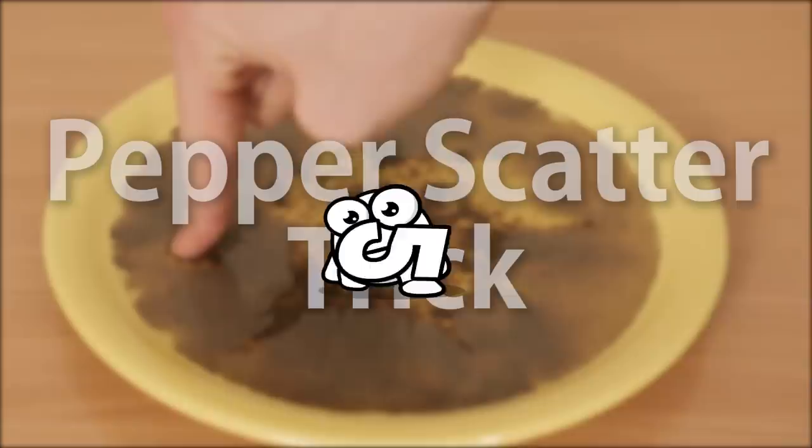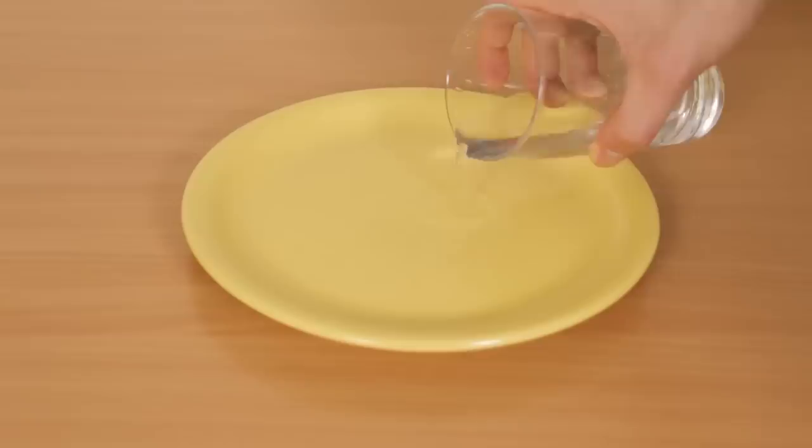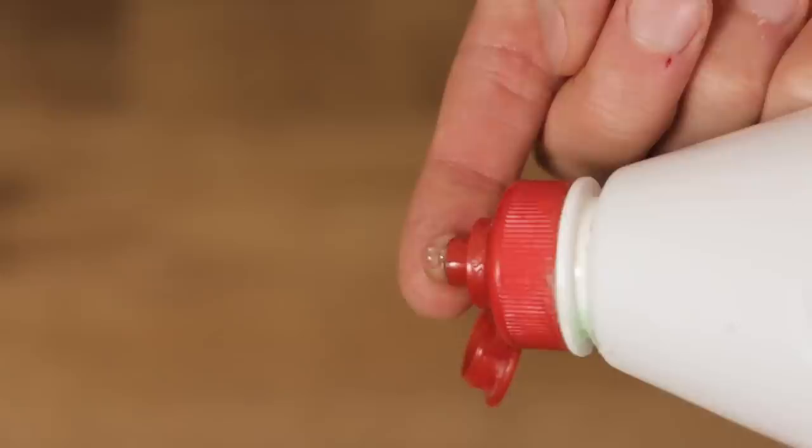Number five, pepper scatter trick. If you want to fool your friends into thinking you have magical powers, perform the pepper scatter trick. It's easy to do, but the results are very noticeable. What you need is a shallow dinner plate, just enough water to cover it, ground black pepper, and your secret weapon, detergent. Pour the water until it spreads throughout the plate. Sprinkle ground pepper onto the water, and then have one of your friends dip a finger into the water. Nothing happens, right? This time you do it, but discreetly coat your fingertip in detergent first, and then touch the water. The pepper scatters away.